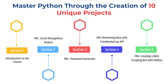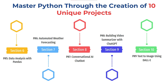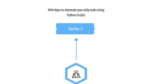The first project will be based on facial recognition, the second will be a password generator, and then we'll see how to retrieve data with CoinMarketCap APIs. Then we'll create a web scraping bot using Python, then data analysis with Pandas, automated weather forecasting, a conversational AI chatbot, a video summarizer with ChatGPT, text-to-image using DALL-E, and finally automating daily tasks using Python scripts.